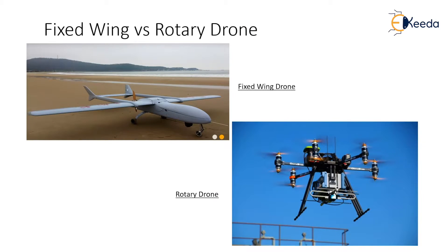Drones are basically of two types: fixed wing drones and rotary drones. Fixed wing drones, as opposed to rotary wing, use a wing like a normal aeroplane to provide lift rather than vertical lift rotors. Because of this, they only need to use energy to move forward, not hold themselves up in the air, so they are much more efficient.